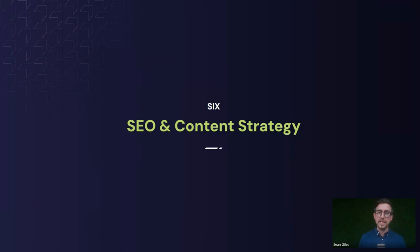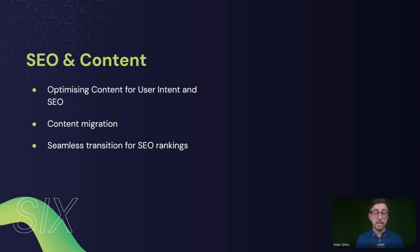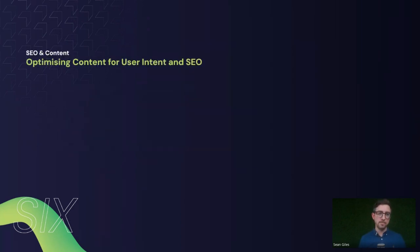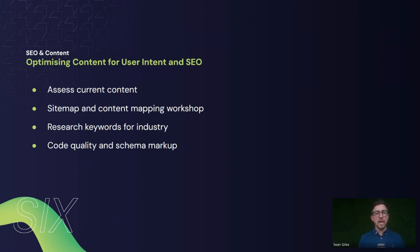Step six is SEO and content strategy. The three areas here are optimizing content for user intent and SEO, content migration, and ensuring a seamless transition for SEO rankings when going from your old site to your new site. You want to assess your current content — if you've got lots of pages, look at how you can refine them into a more focused set of content pages.